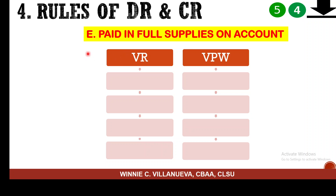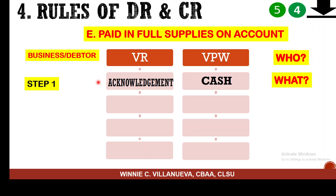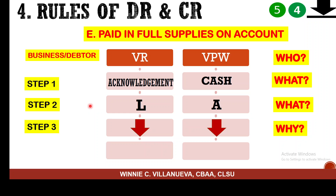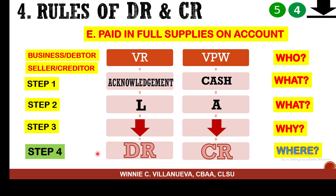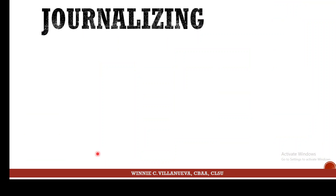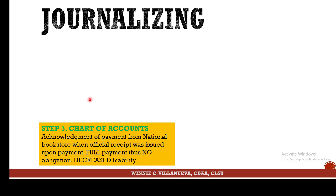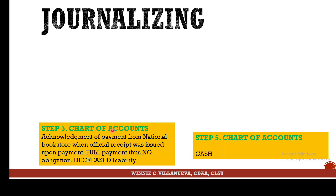The fifth sample: you pay your full debt to National Bookstore. You receive an acknowledgement and give up cash. Your liability decreases and your cash decreases. The decreases would be debited and credited accordingly for liability and asset. You receive an official receipt indicating full payment — your liability decreases, and cash goes out. Date assumed: November 29.